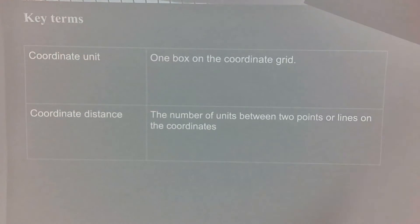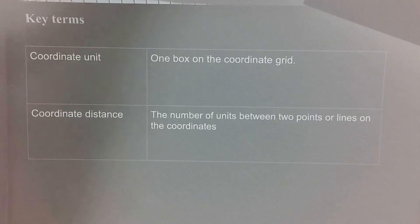The coordinate distance is going to be the number of units between two points or lines on the coordinate plane. Let's take a moment to make sure we jot down those two key terms and then we will jump into we do number one.